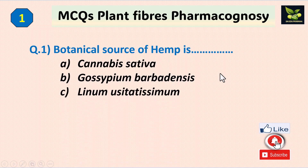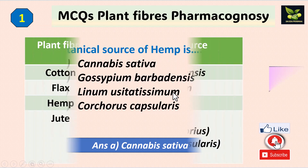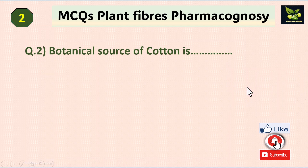The answer is Cannabis sativa. You can see here there are various types of plant fibers: cotton, flax, hemp, and jute. The botanical source of cotton is Gossypium barbadensis, flax is Linum usitatissimum, hemp is Cannabis sativa, and jute is Corcorus species. You can take a screenshot of this slide.